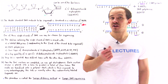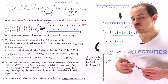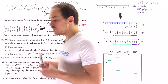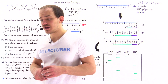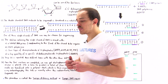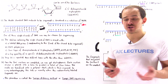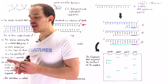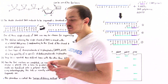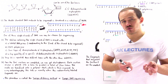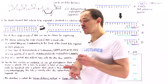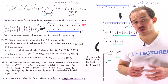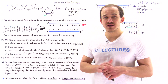In biochemistry, it's very useful to be able to determine the sequence of nucleotides in a DNA molecule, because if we know the sequence of nucleotides, that will give us information about how gene expression takes place and what types of proteins are produced. The process by which we can actually sequence a DNA molecule is known as the Sanger dideoxy method, or simply Sanger DNA sequencing.